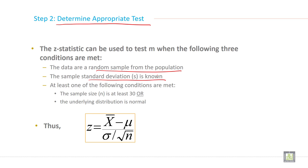At least one of the following conditions are met: the sample size is at least 30 or the underlying distribution is normal.